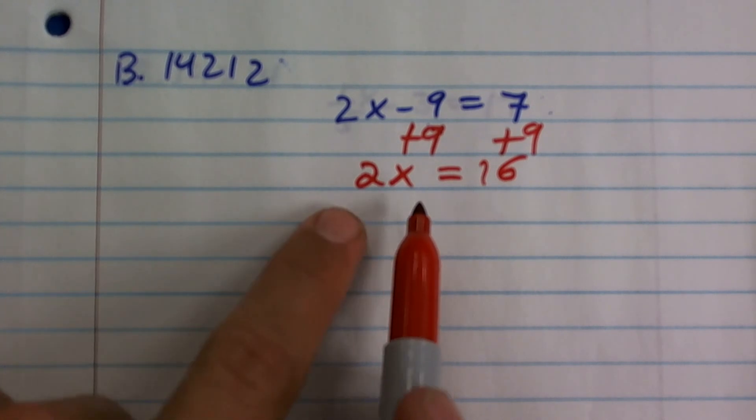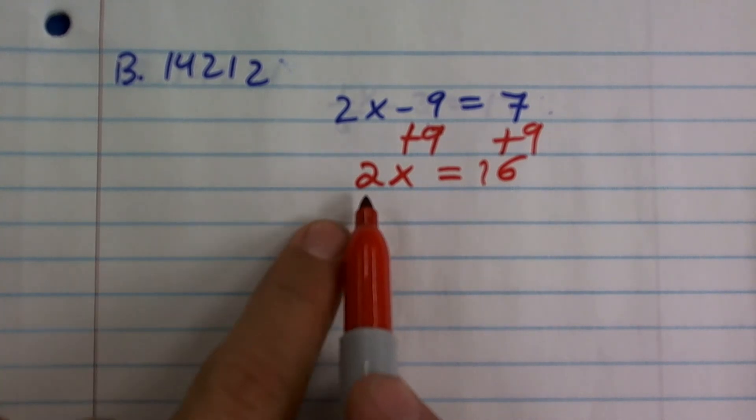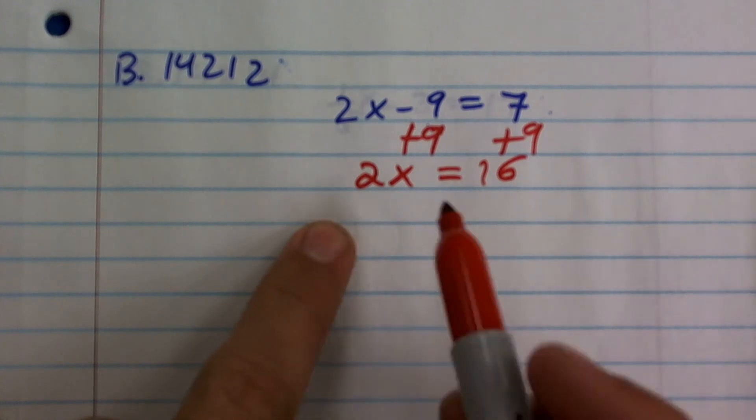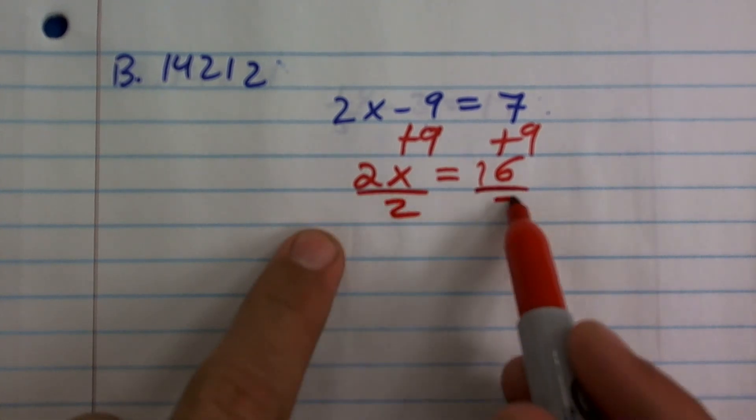Now I take a look at my variable and say, what is happening to my variable? Well, it's being multiplied by 2. So to undo being multiplied by 2, I need to divide by 2 on both sides.